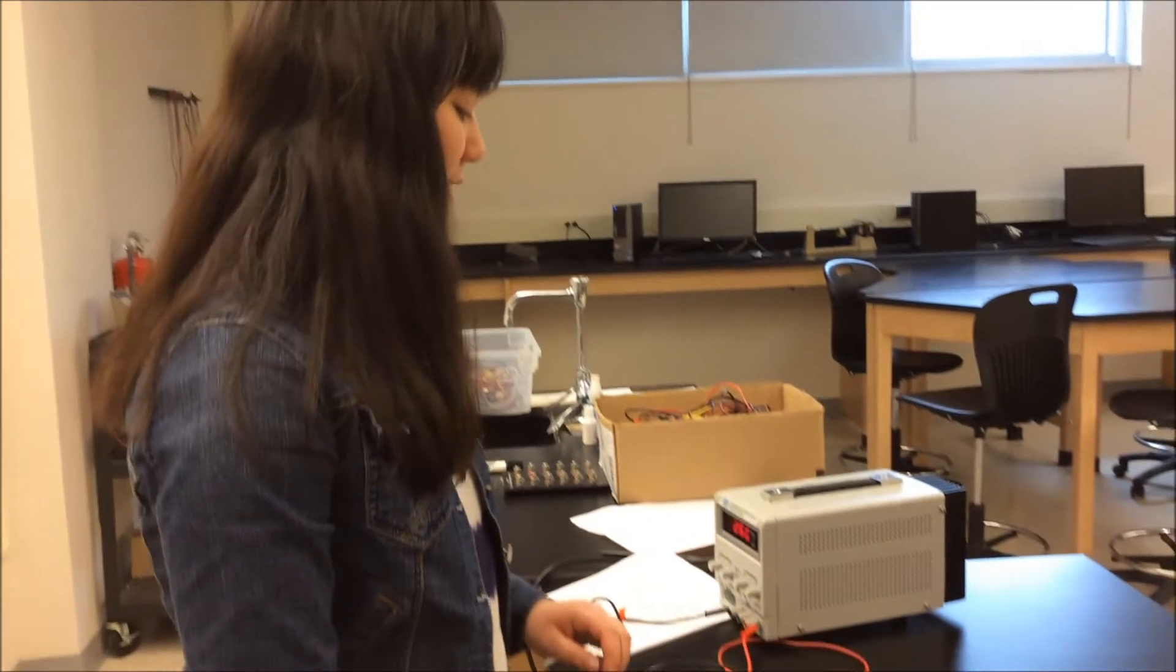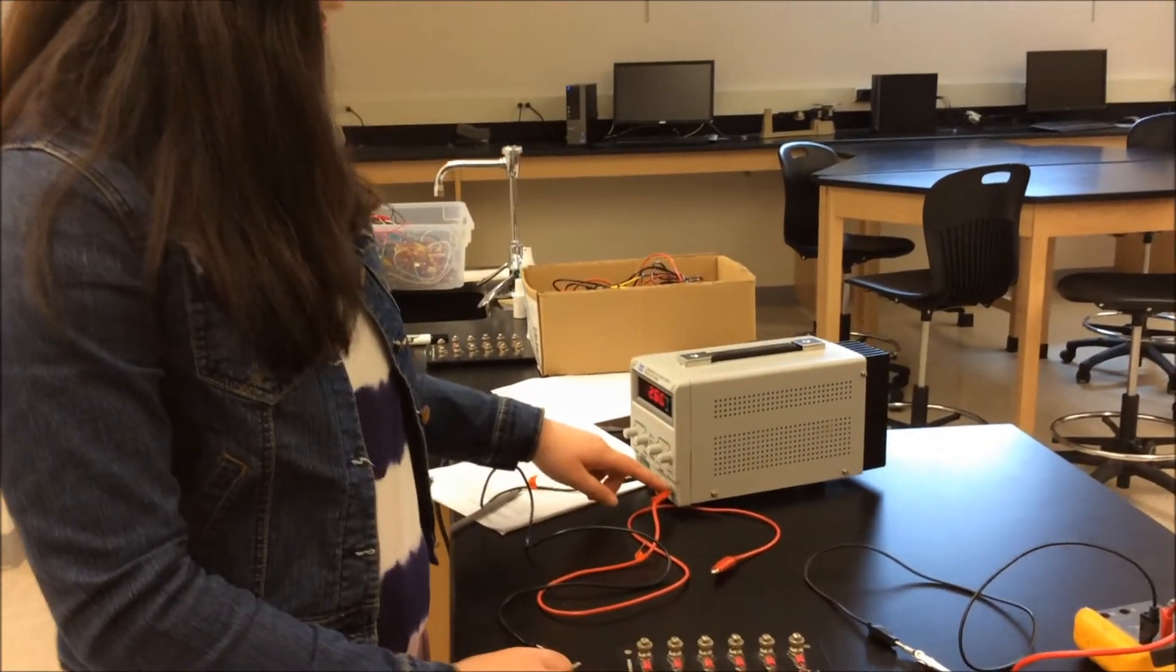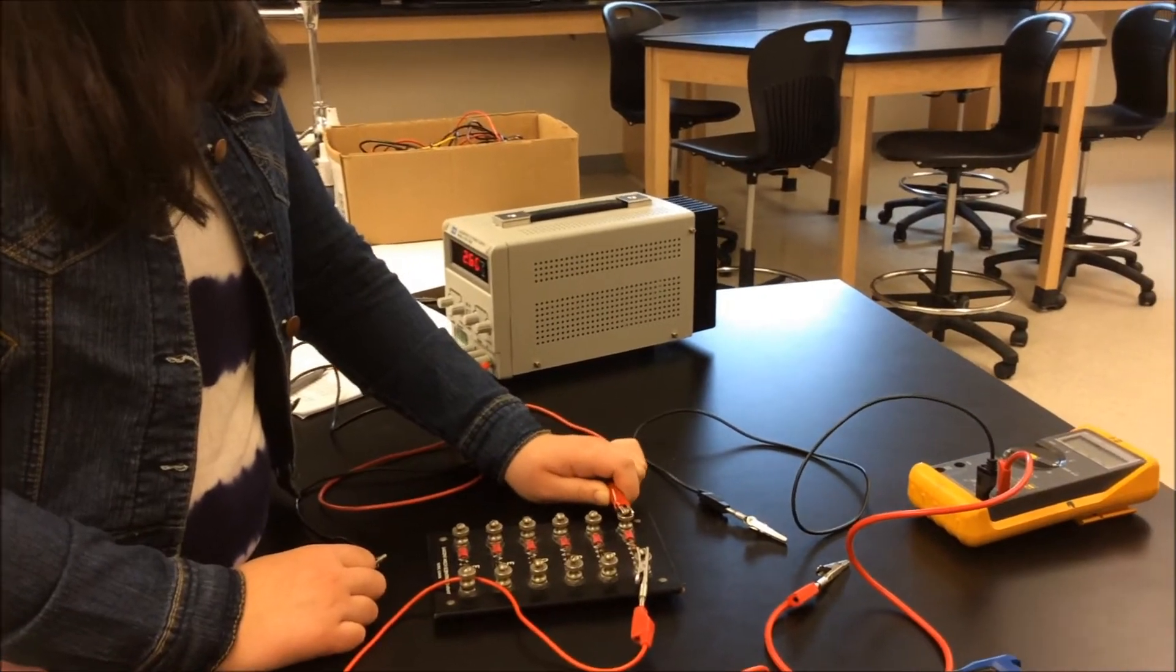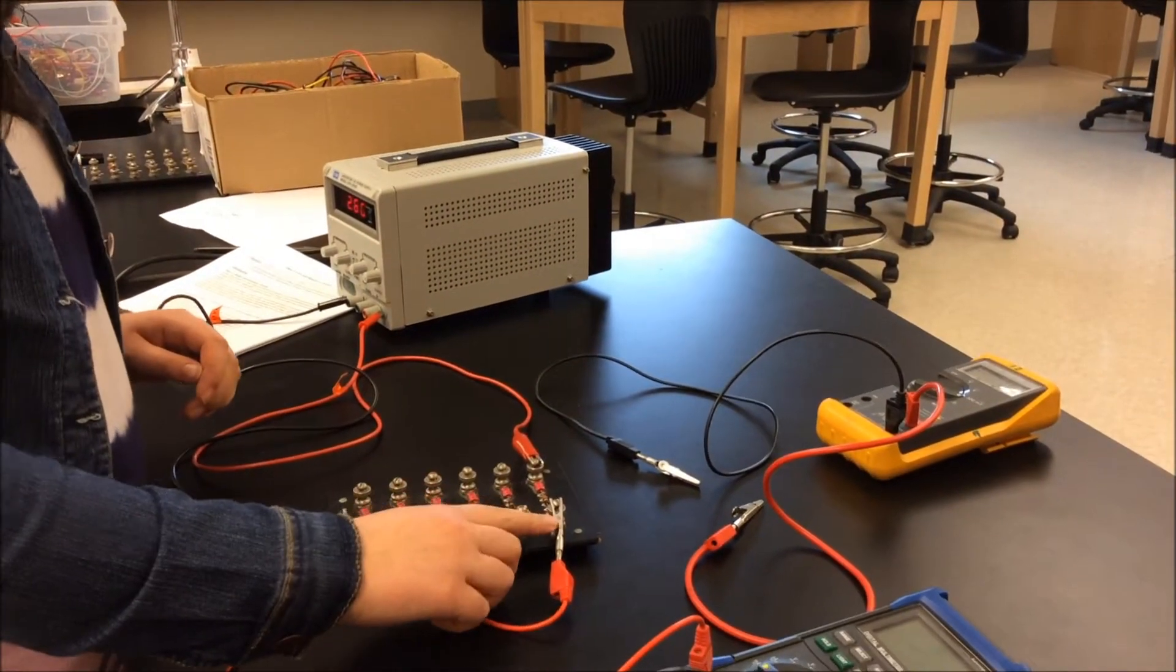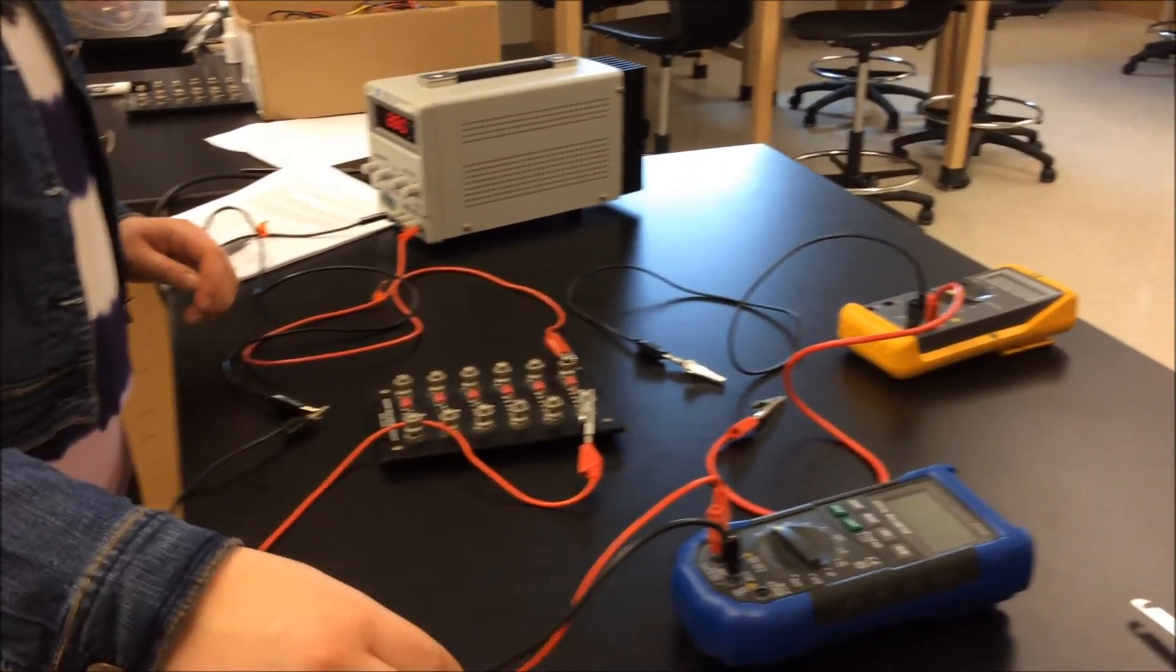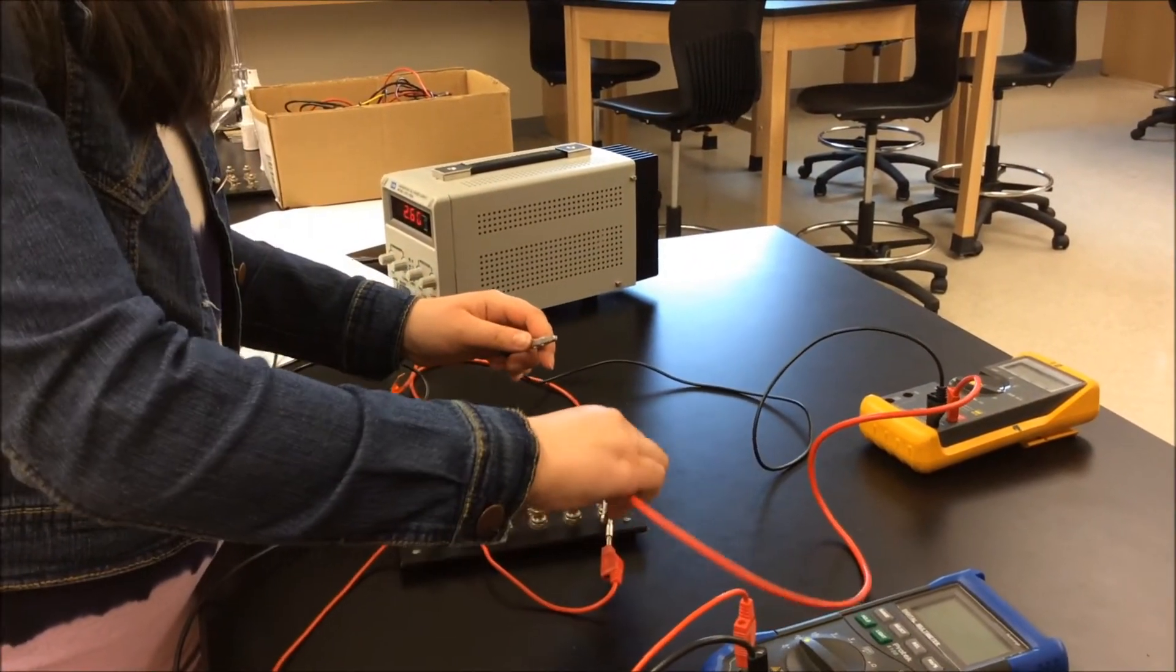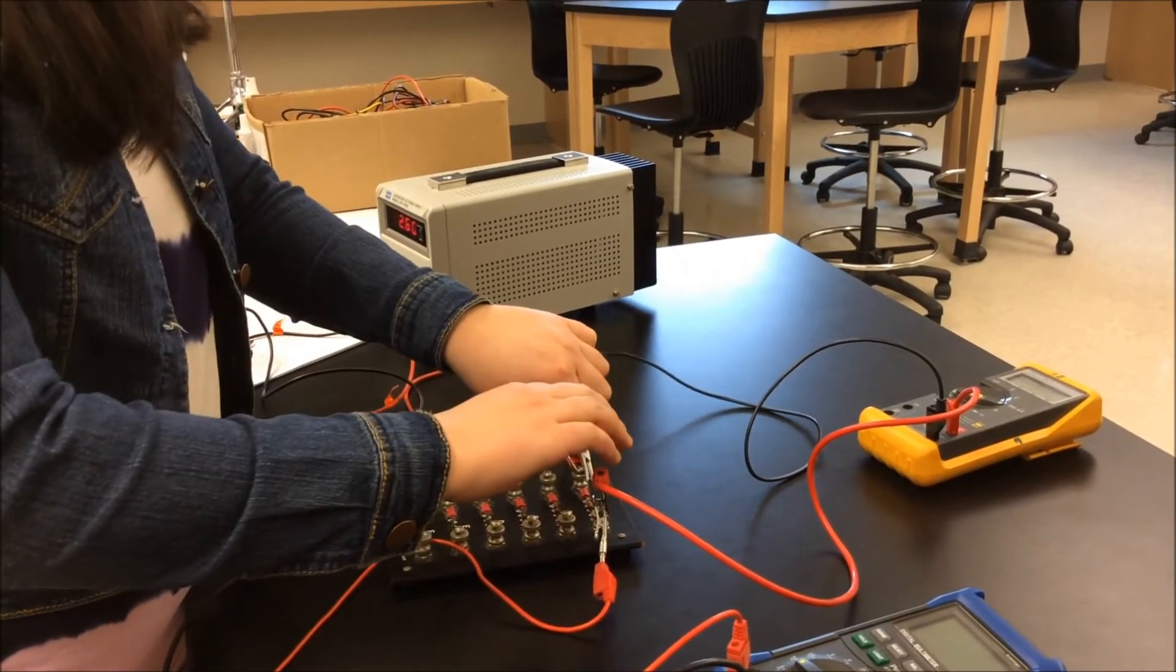So for the wiring for this experiment, you're going to connect the positive terminal of the power supply to resistor A, then from resistor A to the ammeter, and then the ammeter is connected back to the power supply. You're also going to connect the voltmeter to resistor A in parallel.